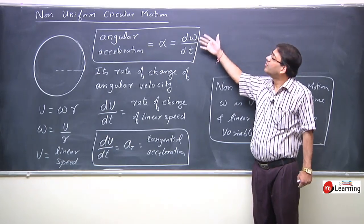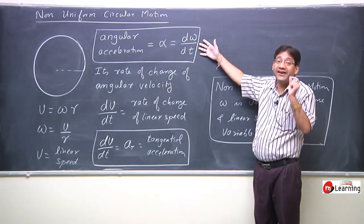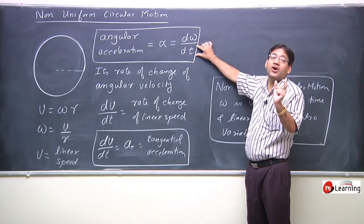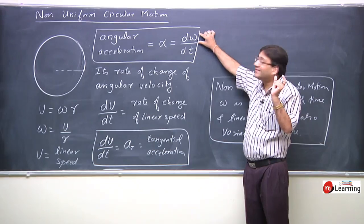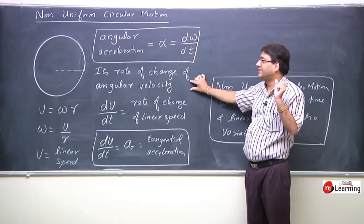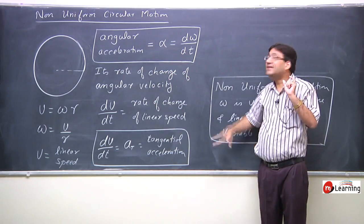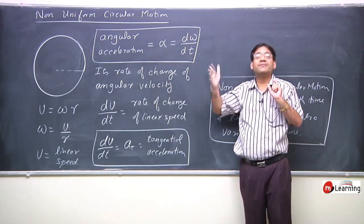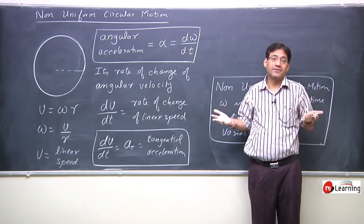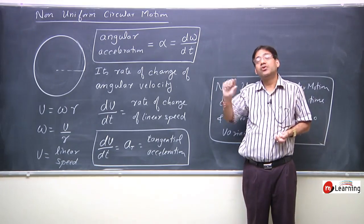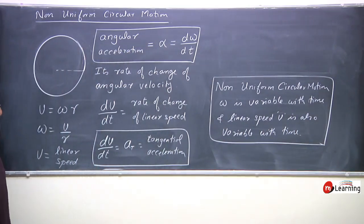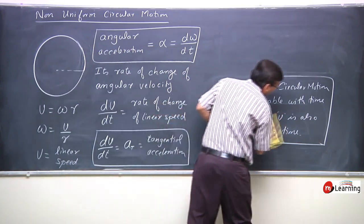For a particle in non-uniform circular motion, some angular acceleration term will be defined because omega is not constant — it is changing with time. The rate at which omega changes, expressed as dω/dt, is called angular acceleration. If angular velocity is increasing, angular acceleration is positive; if angular velocity is decreasing, angular acceleration is negative.